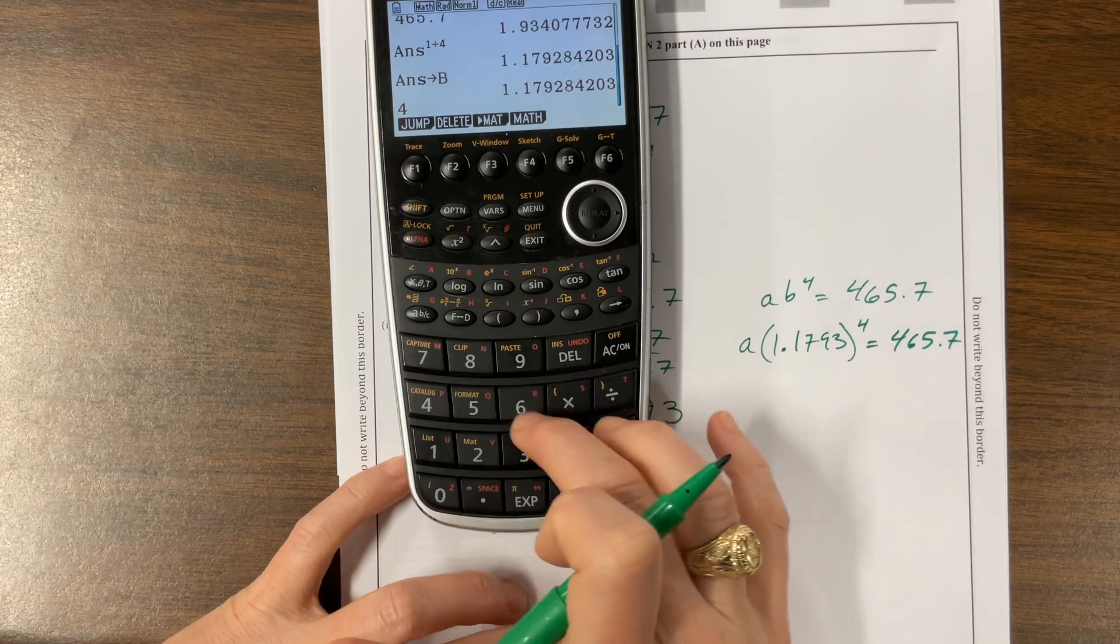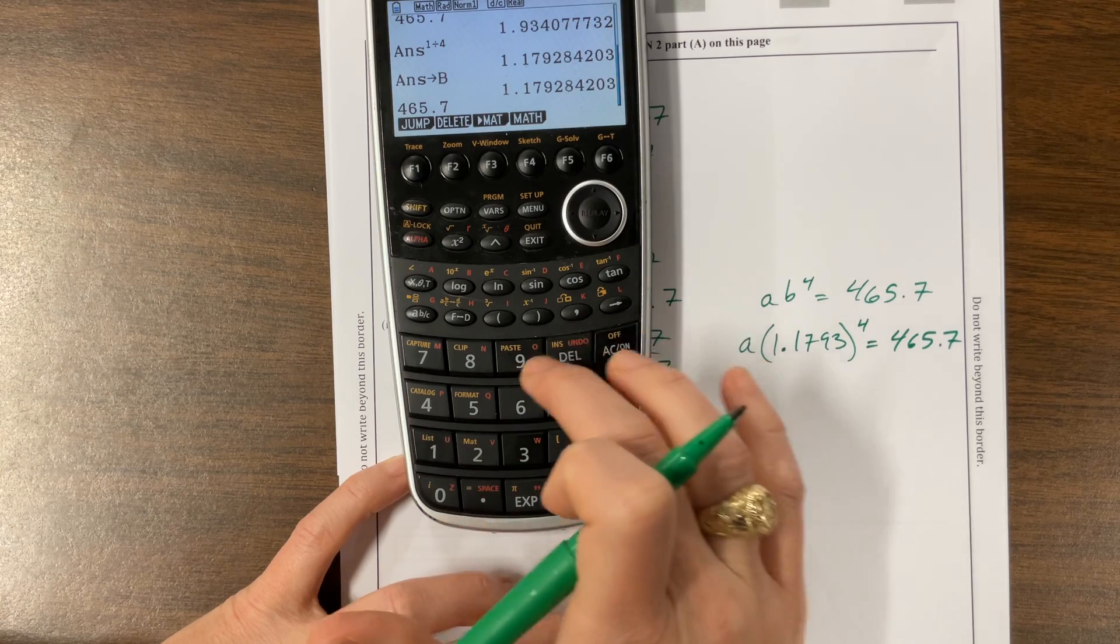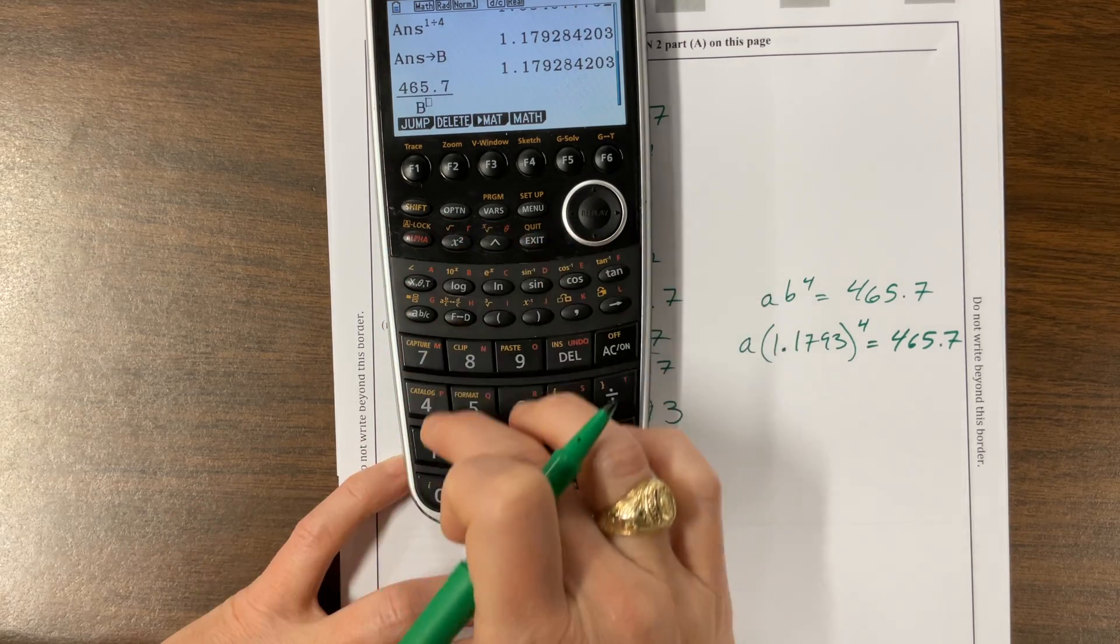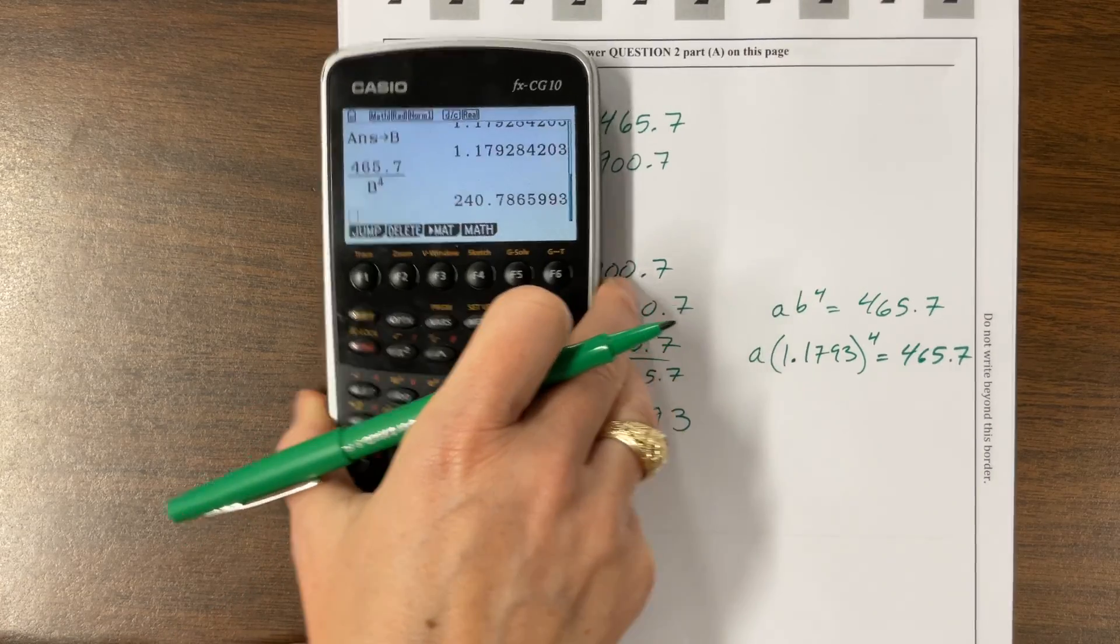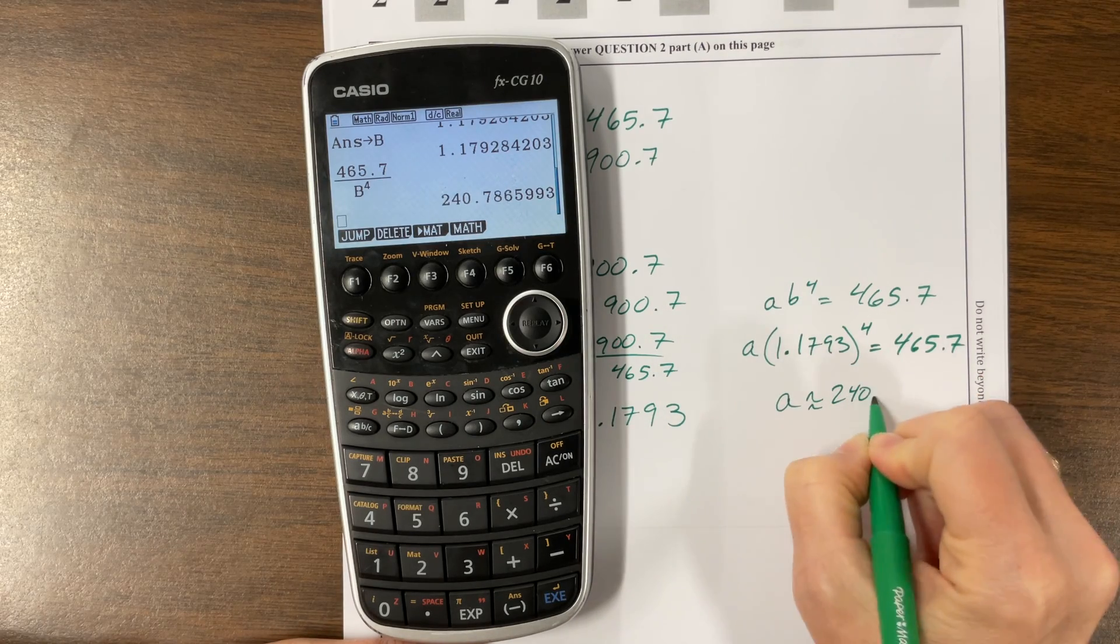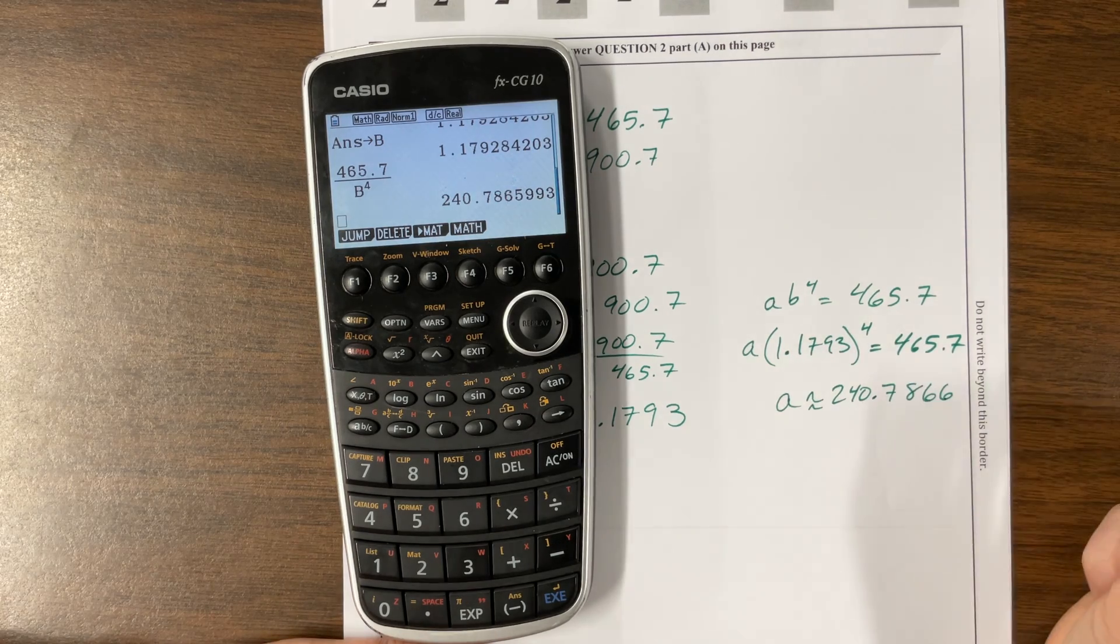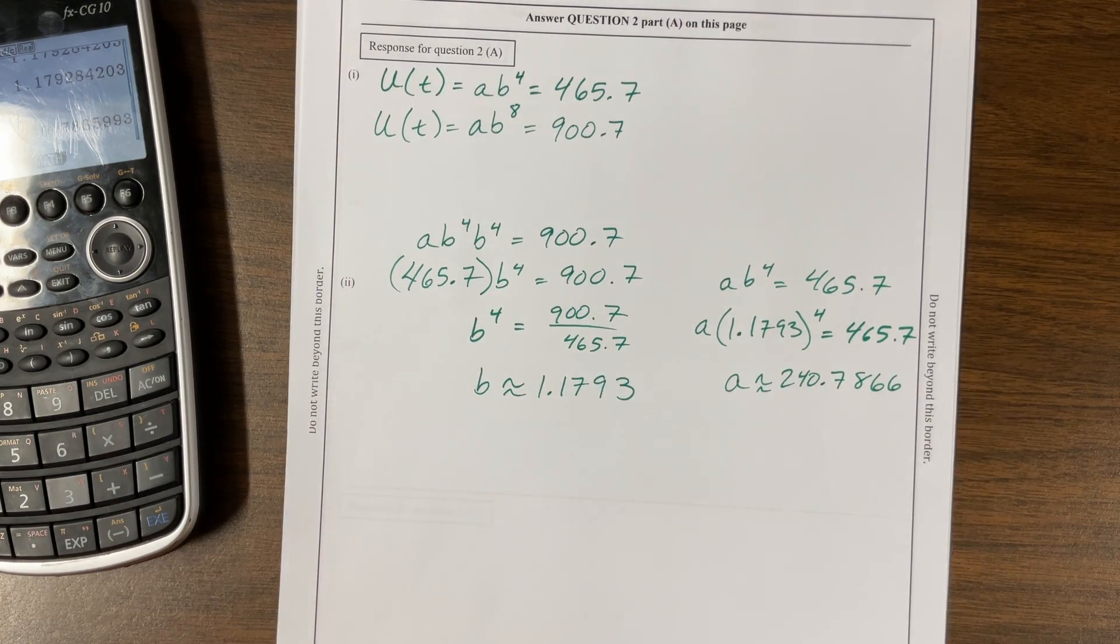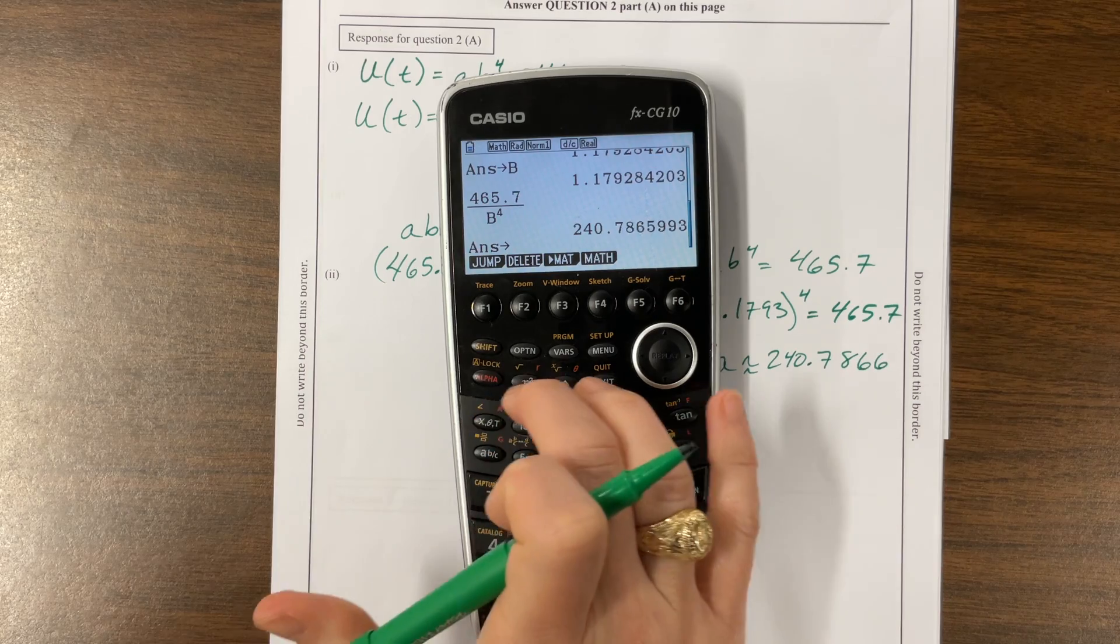So A times B to the fourth equals 465.7. I can say 465.7 is getting divided by alpha B raised to the fourth power. And so my A value is about 240.7866. So there's A and B.